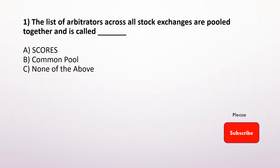First question. The list of arbitrators across all stock exchanges are pulled together and is called: Option A. Scores, Option B. Common pool, Option C. None of the above. The correct answer is Option B. Common pool.